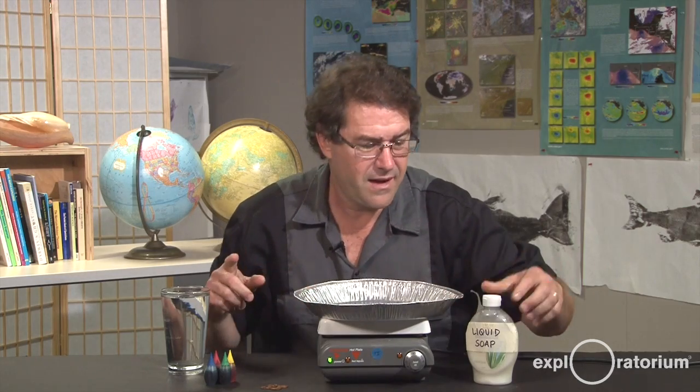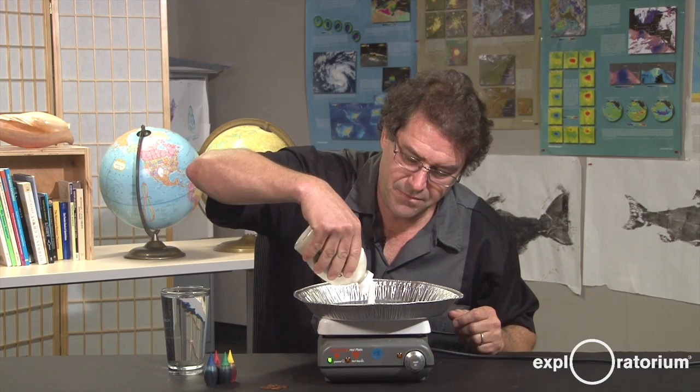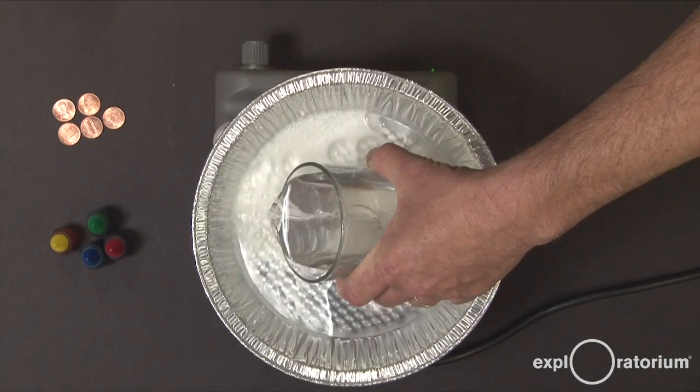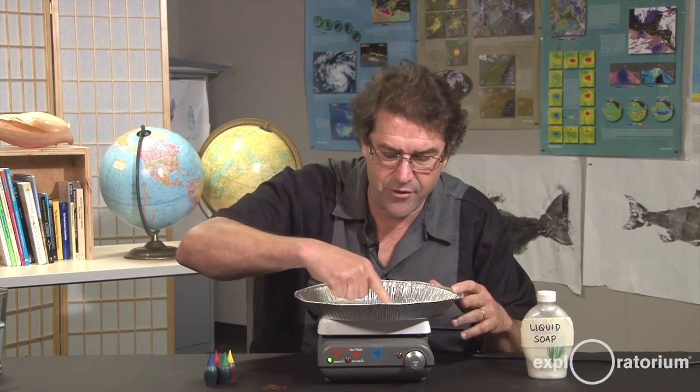So take your pie pan, and you're going to add a couple tablespoons of your liquid soap. You might need to add more later. I'm going to add about a centimeter or two of water to my pie pan, and then I'm going to stir it around with my finger.